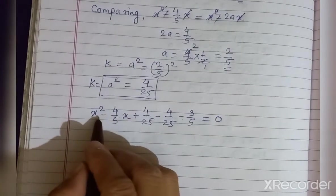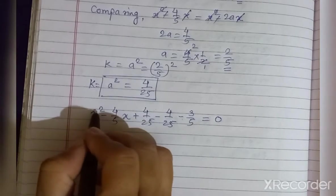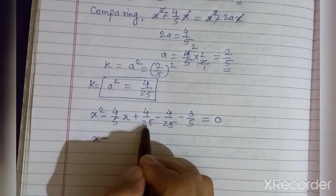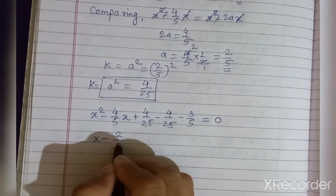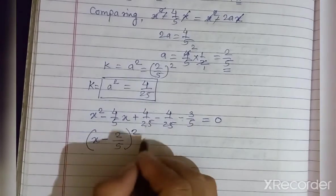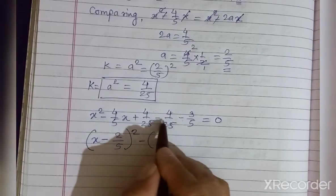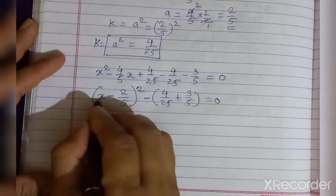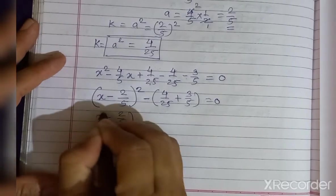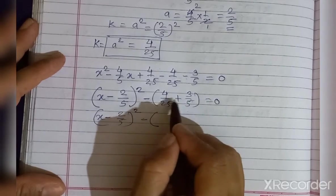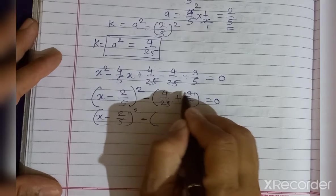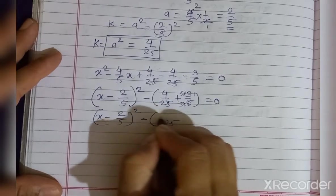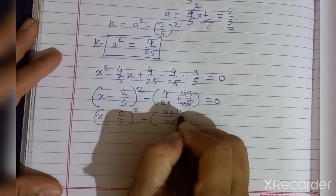Now consider the first three terms: x² minus (4/5)x plus 4/25. The first term is x², the middle term sign is minus, and 4/25 is the square of 2/5. So these form (x minus 2/5)². Take minus sign common for the remaining terms: 4/25 plus 3/5. Since denominators differ, multiply to get 4/25 plus 15/25, giving 19/25.